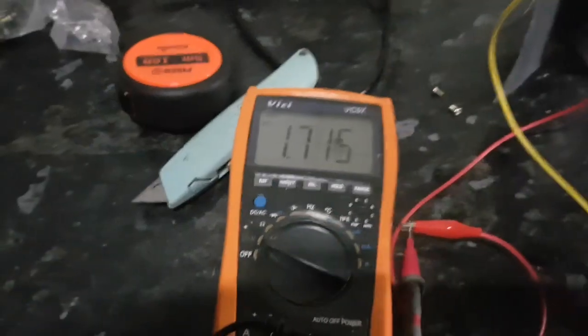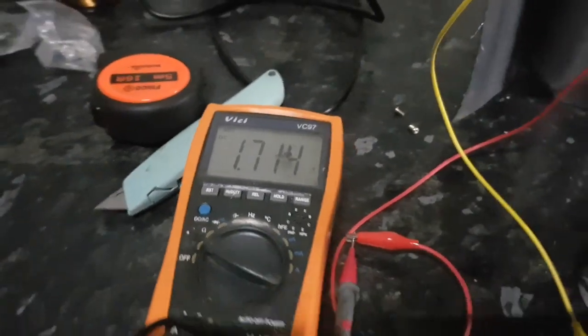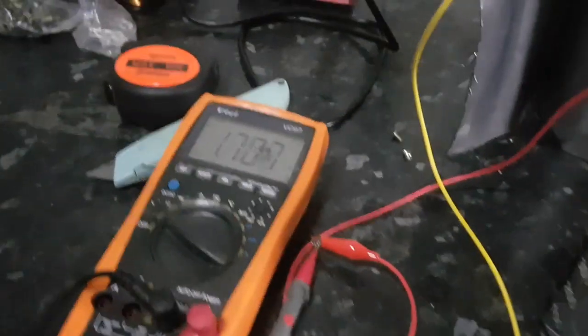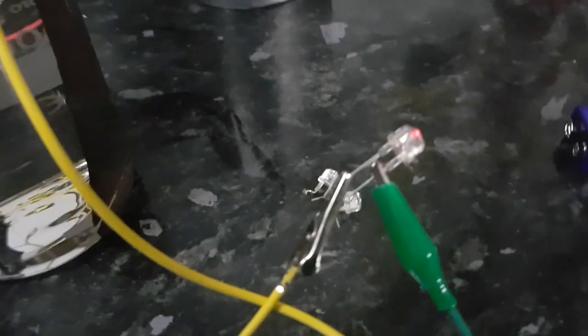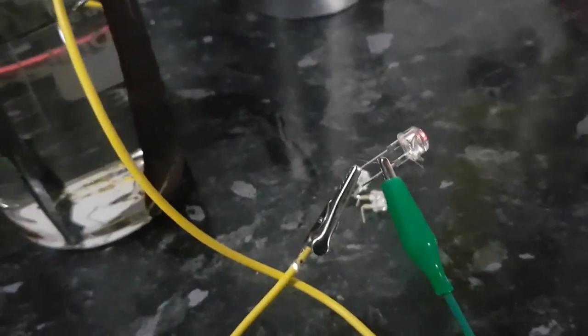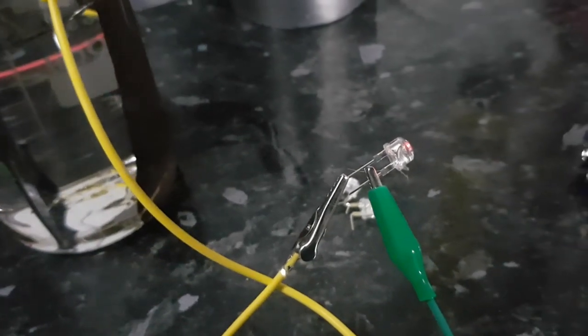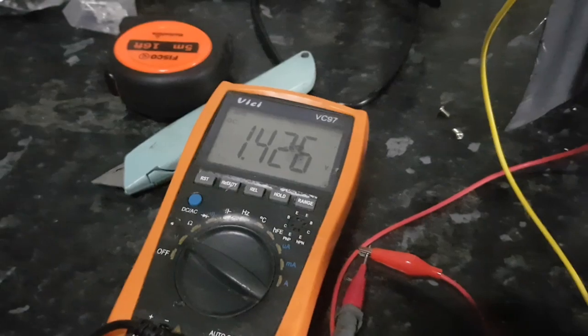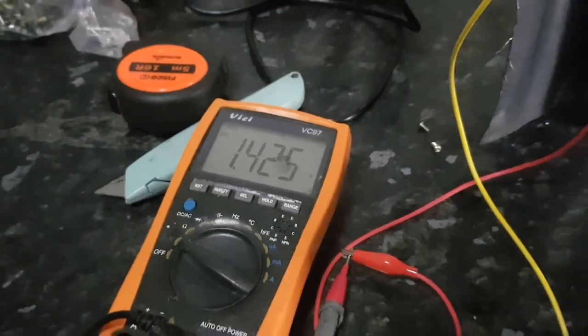We're at 1.71 volts and dropping, as you can see, discharging. Let's drain this down till the bulb goes off and then we'll give it another little boost and see if we can recharge it. We're down to 1.4 and self-discharging a little bit still.